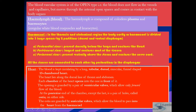The third is the perineural sinus, present ventrally above the sterna and enclosing the nerve cord. All three sinuses — pericardial, perivisceral, and perineural — are connected to each other by perforations in the diaphragm.